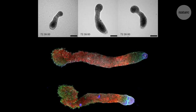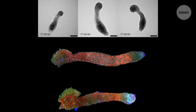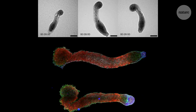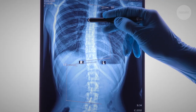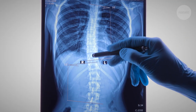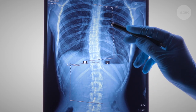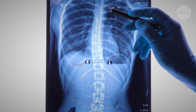Modelling this process could give scientists a new platform to study human development and disease. For example, it has been suggested that disorders like scoliosis might be linked to problems during somitogenesis.